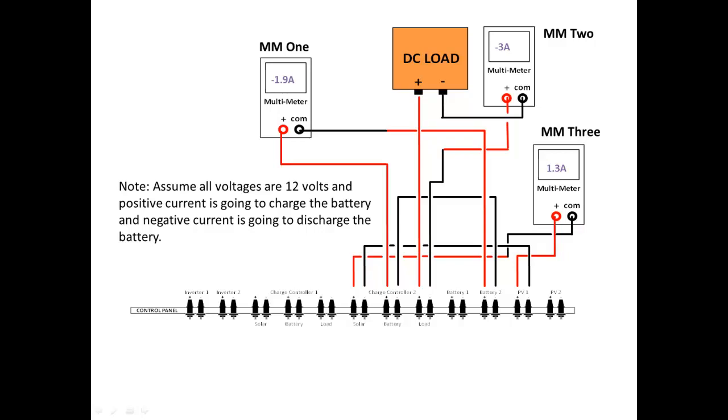In this video, we will take what we have learned about the wiring diagram and apply it to calculate the power usage or production of each device. So the question we will be answering is, due to these readings, how much power is PV1, battery 2, and the DC load producing and/or using?